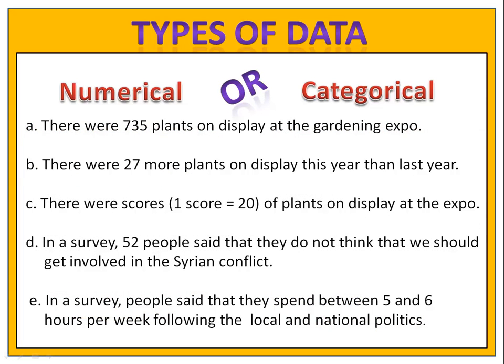In our first exercise, we want to determine if each of these describes numerical or categorical data. Remember, if an exact quantity is given to you, you have numerical data. If an exact quantity is not given to you — just a description or a range of data — then we're dealing with categorical data. Please pause the video here and complete the exercise.